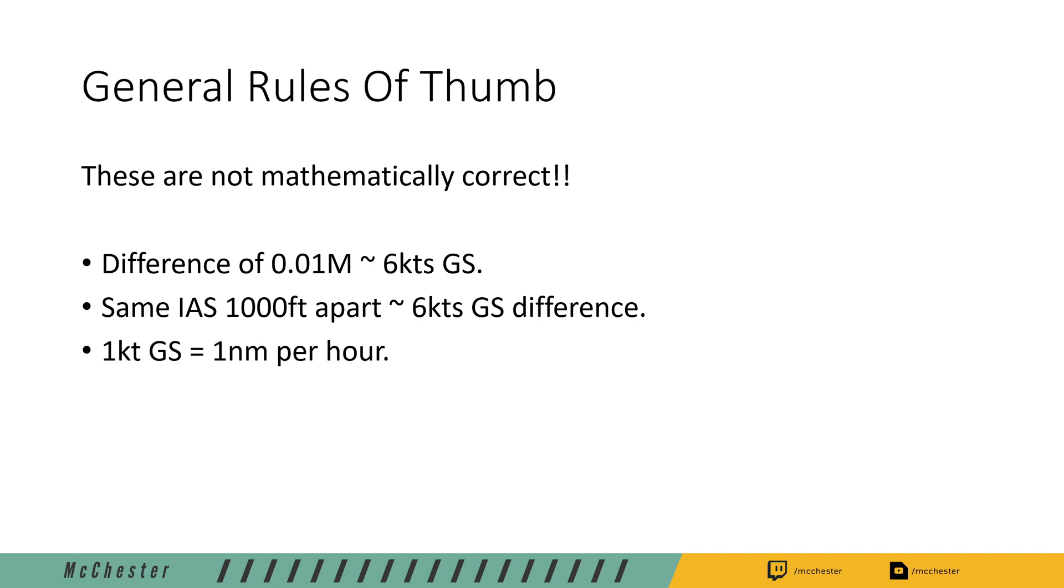Also, it's required to know that one knot ground speed equals one nautical mile per hour, and this of course equals that if you have a ground speed of 60 knots that equals one nautical mile per minute.